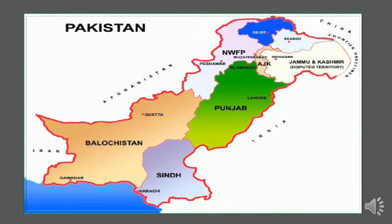This is the map of Pakistan. You're already very familiar with this map. You just have to locate the five provinces of Pakistan: Balochistan, Sindh, Punjab, NWFP, and Gilgit-Baltistan. No doubt it is an autonomous body but it is also a federally administered body.